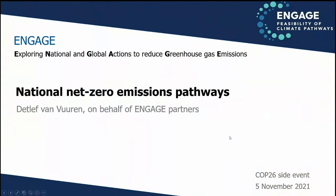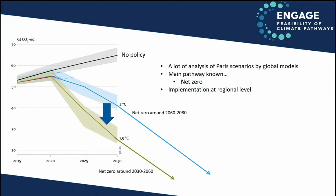My presentation is a little bit in between the presentations from Bas and Helene. When Bas was presenting, he was showing the analysis that we usually do with global models, where we are looking into pathways that could bring us to 2 degrees or 1.5 degrees. There's a lot of analysis done with global models — the SR 1.5 analyzed a couple of thousands of scenarios. Among others, going to 2 degrees and 1.5 degrees means that we have to go to net zero. It's interesting to look at the global perspective because it relates directly to Paris, but implementation needs to happen at the regional level.